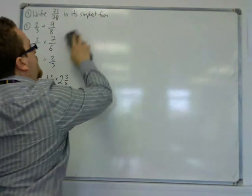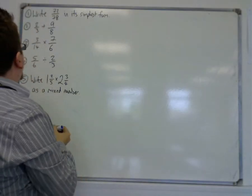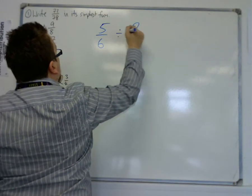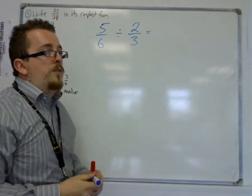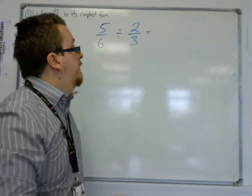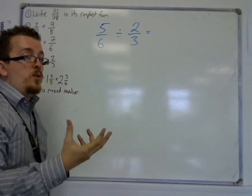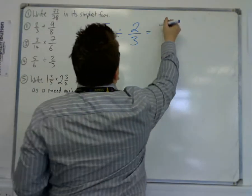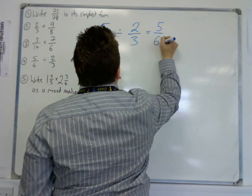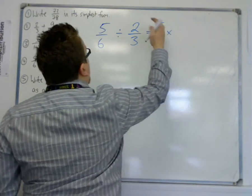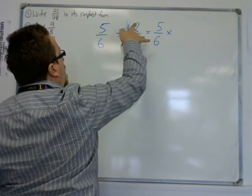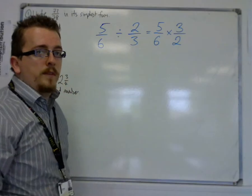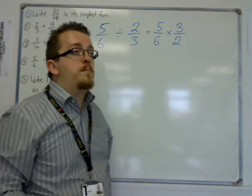Then we've got dividing fractions. 5 over 6 divided by 2 over 3. Now, dividing fractions uses a neat little trick whereby we can turn it into a multiplication of fractions. So the process is, leave the left-hand fraction alone, turn the division into a multiplication, and flip the second fraction upside down. So use what we call the reciprocal. So dividing by a fraction is the same as multiplying by its reciprocal.